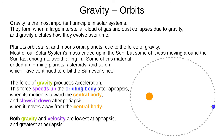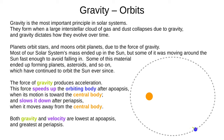The force of gravity produces acceleration. This force speeds up the orbiting body after apoapsis, when it is moving towards the central body, essentially falling towards the Sun. And gravity slows it down after periapsis, when it moves away from the central body. Gravity and velocity are both lowest at apoapsis and highest at periapsis.